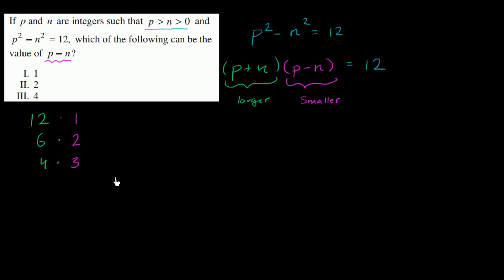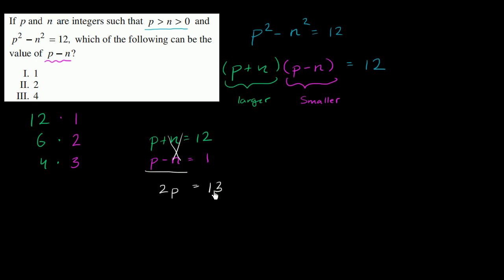Let's think about how we can rule some of these scenarios out. First scenario: let's say p plus n is equal to 12 and p minus n is equal to 1. We can add the left-hand sides — the n's cancel out — giving 2p, and the right-hand side gives 13. Dividing both sides by 2, p equals 13 over 2. This is not an integer, which contradicts our assumption. So p plus n cannot be 12, and p minus n cannot be 1.